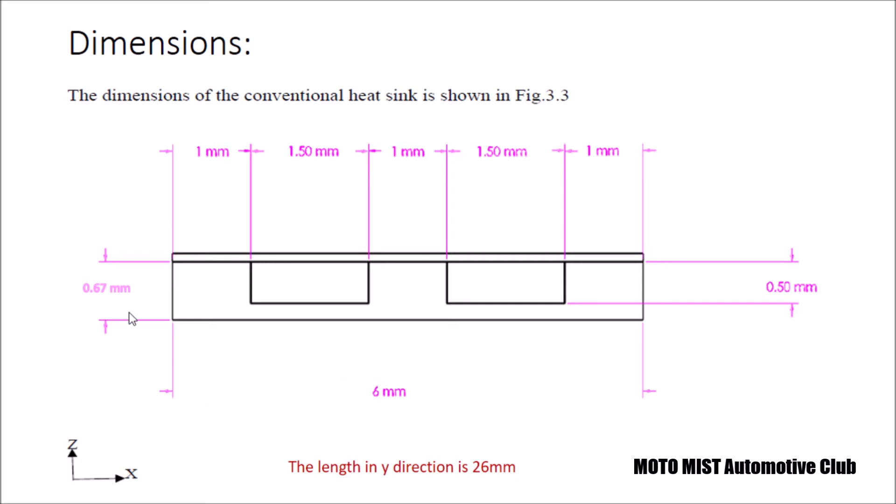The height in the z direction is 0.67 millimeters. The width of our rectangular channel is 1.5 millimeters, and the gap between two mini channels is 1 millimeter. One thing you could miss is the length in the y direction is 26 millimeters.